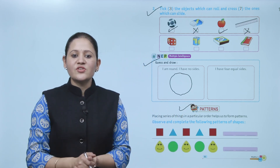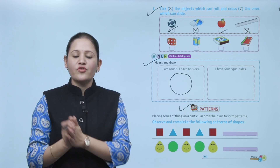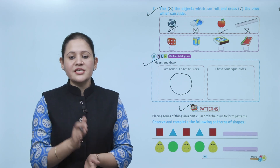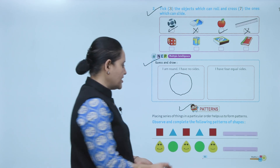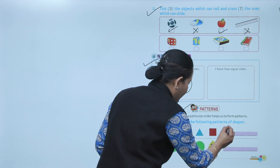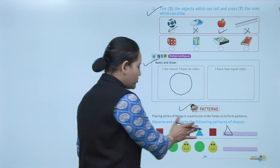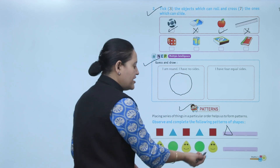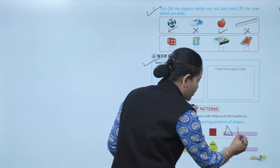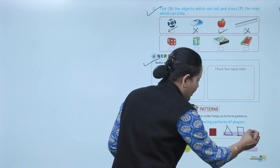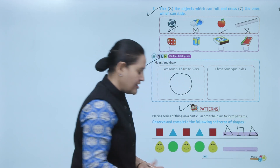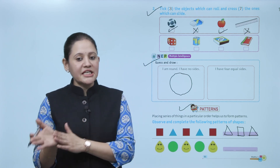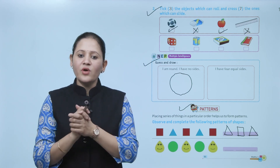Next: patterns. Placing a series of things in a particular order helps us to form patterns. For example: square, triangle, square, triangle, square — follow the next triangle. You have to follow the color scheme also — first is red then blue, red blue red, so the triangle will be blue. Observe what pattern is following and what color scheme to remember.